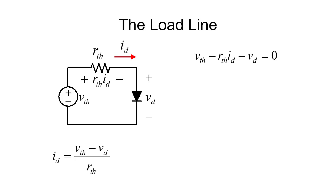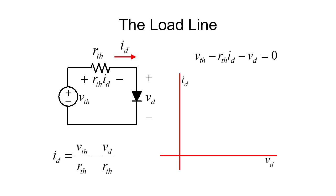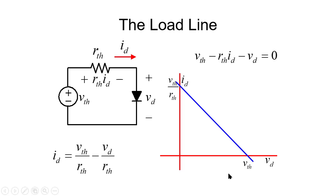We write a KVL equation around that loop and solve for the current in the diode: I_d = (V_th − V_d) / R_th. We can simplify further and realize this is the equation of a line on the I versus V_d plane — a line with a negative slope. When V_d is zero, the value is V_th / R_th; when I_d is zero, the voltage is V_th. That line is called the load line of the circuit.